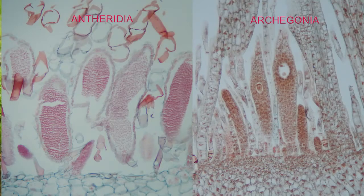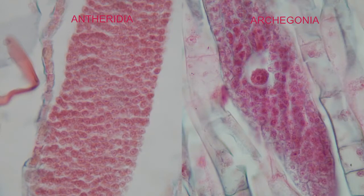The gametophyte produces the gametangia, where the sex cells are produced: the antheridia, which produce the flagellated sperm, and the archegonia, which produce the ova.